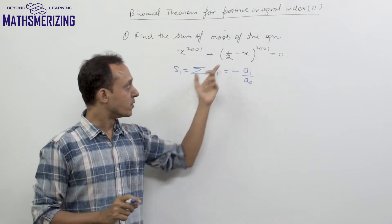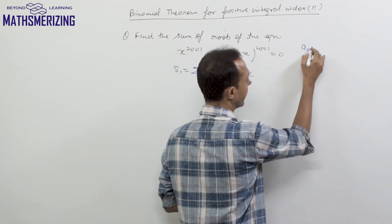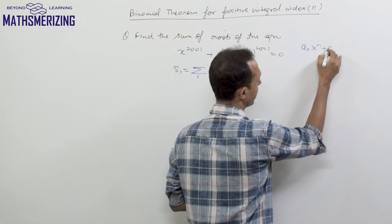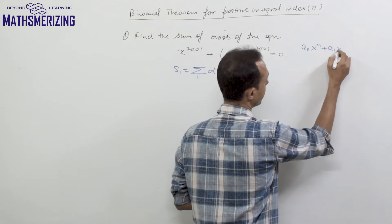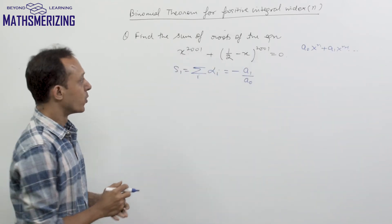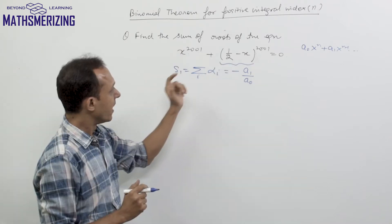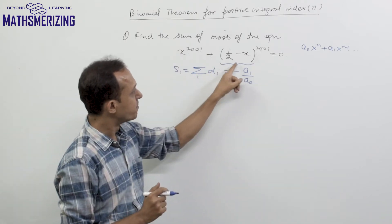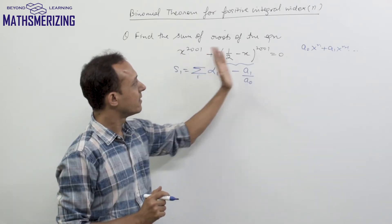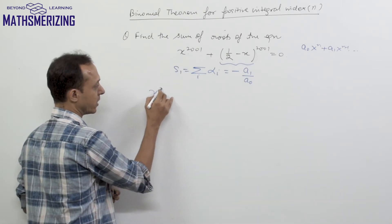Suppose in this case it's a polynomial of degree n, so I can write a_naught x to the power n plus a1 x to the power n minus one. What I'll do is write the expansion of this binomial series and just write the last few terms, starting with x to the power 2001.